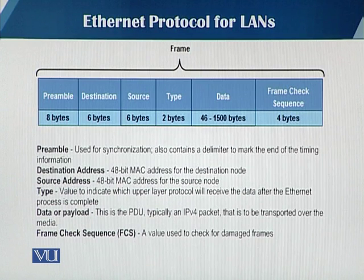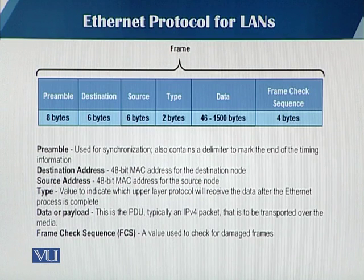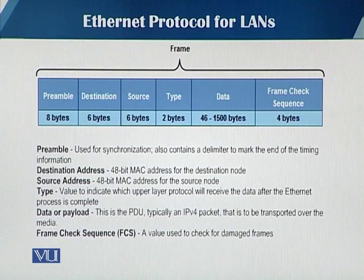There is a destination field with a 48-bit MAC address for the destination node, and a source field with a 48-bit MAC address for the source node. Then there is a type field — a 2-byte field that tells you the upper layer protocol that will receive this frame. The payload is the data field, which is the PDU, and it can vary from 46 bytes up to 1500 bytes.